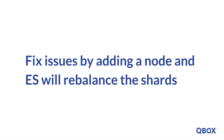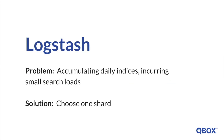If this is the case, simply add a node and Elasticsearch will rebalance the shards accordingly. Just a reminder that we're omitting the specification of replicas from this discussion. The same ideal shard guideline of one shard per index per node also holds true for replica shards. Do you accumulate daily indices and yet incur only small search loads? Perhaps these indices number in the hundreds, but each index is one gigabyte or more.